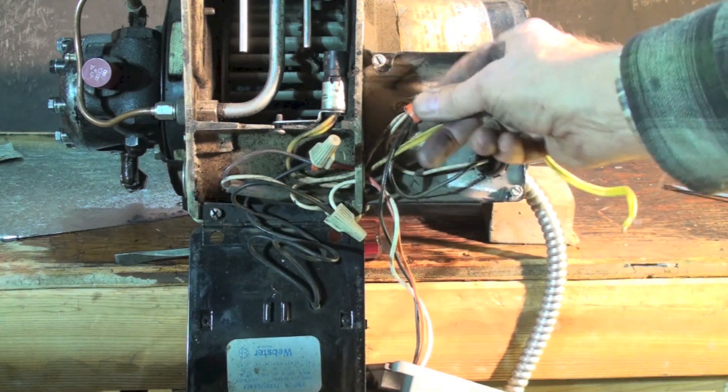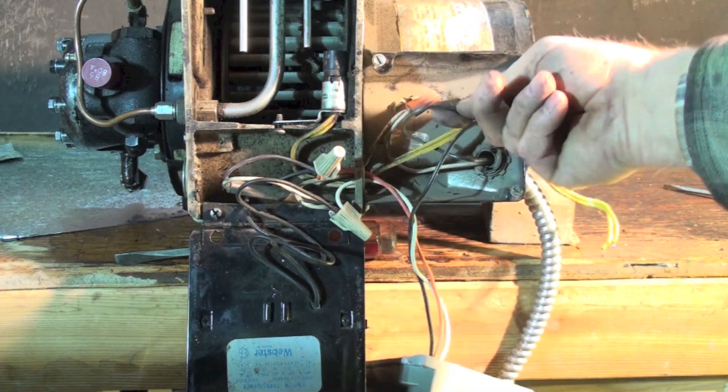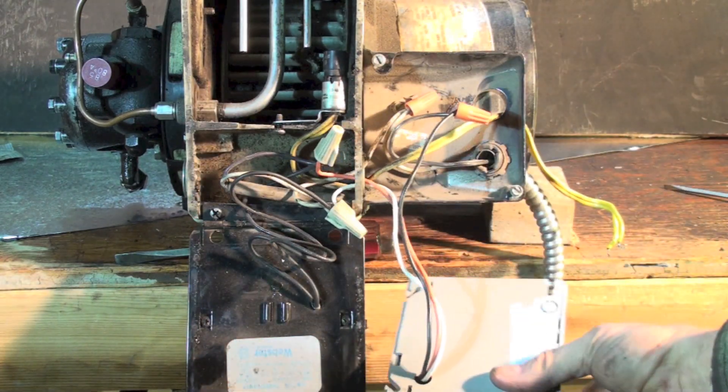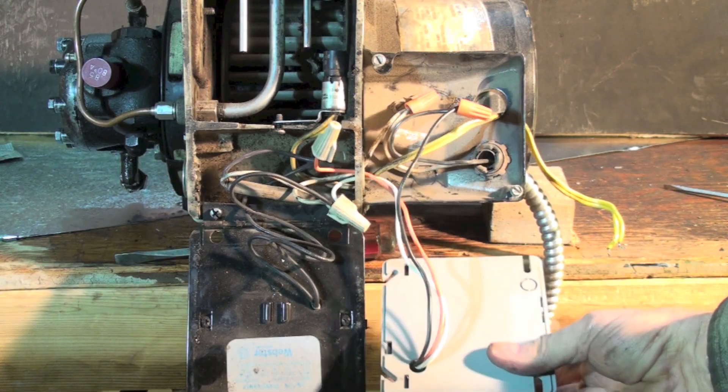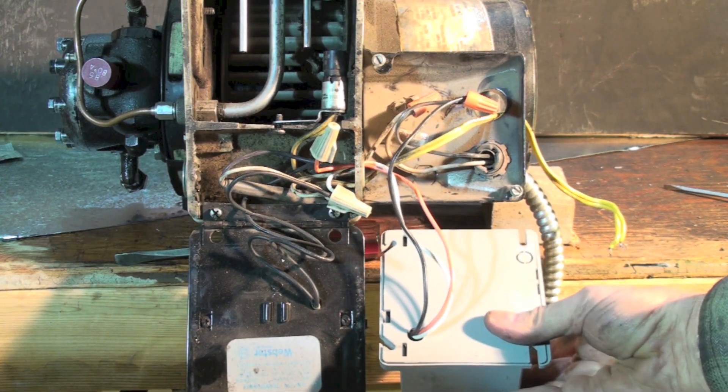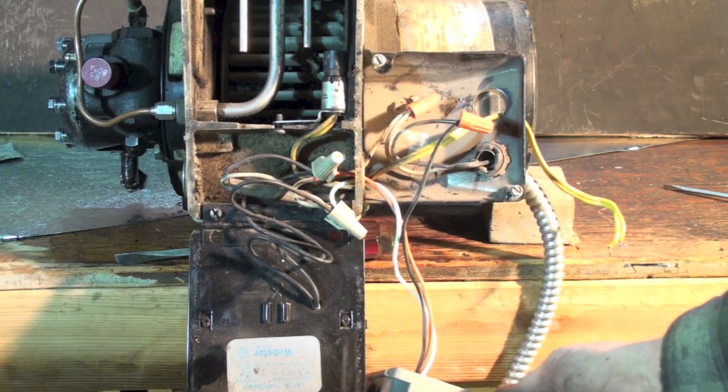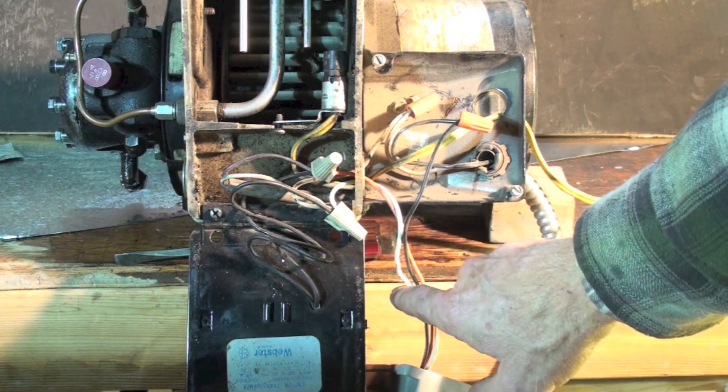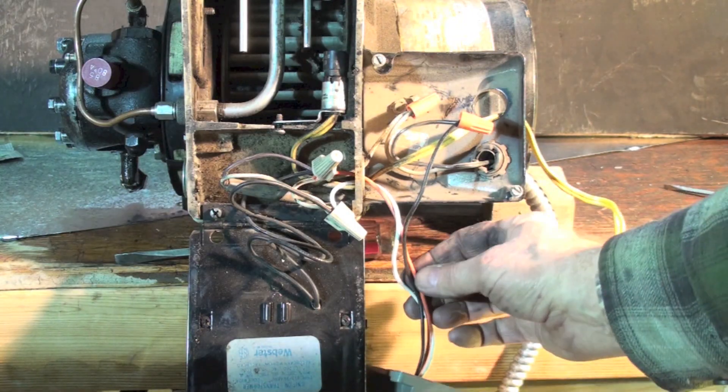The black lead comes in like this, and the only place a black lead goes is the cad cell relay. That's the only place. So we have neutral that's coming to the cad cell.